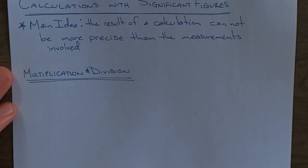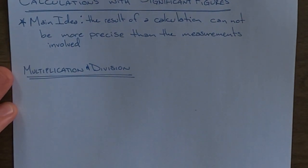For multiplication and division, your answer has to have the same number of significant figures as the least precise measurement that went into it.